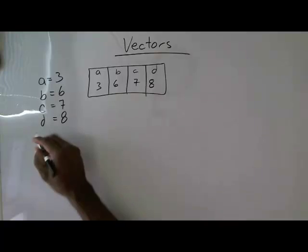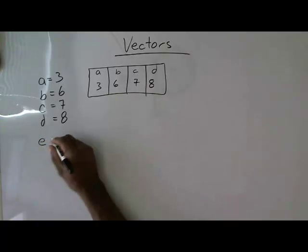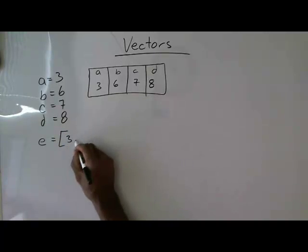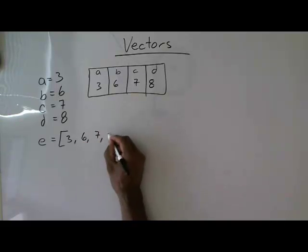Vectors allow us to do something like this. Let's say if we had vector E and this is actually how you define a vector. If we had three, comma six, comma seven, comma eight, right?